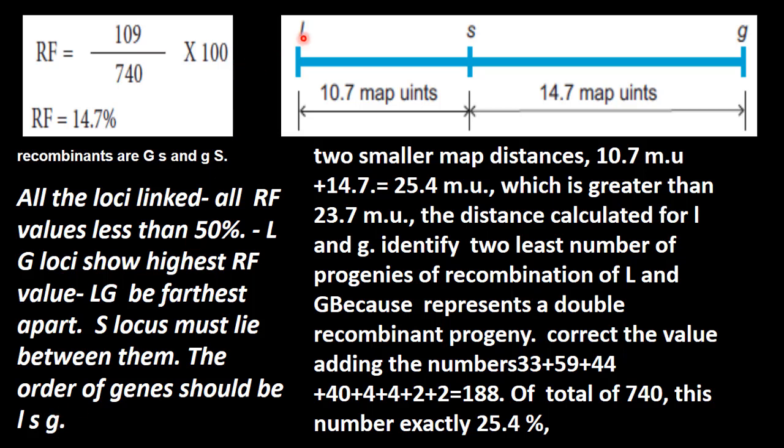S locus must lie between them. So the order of the genes in the chromosome will be L, S and G. L and G will be further apart, S will be in between. Two smaller map distances, 10.7 and 14.7. This is 10.7, that is smaller. Another is 14.7 for S and G.